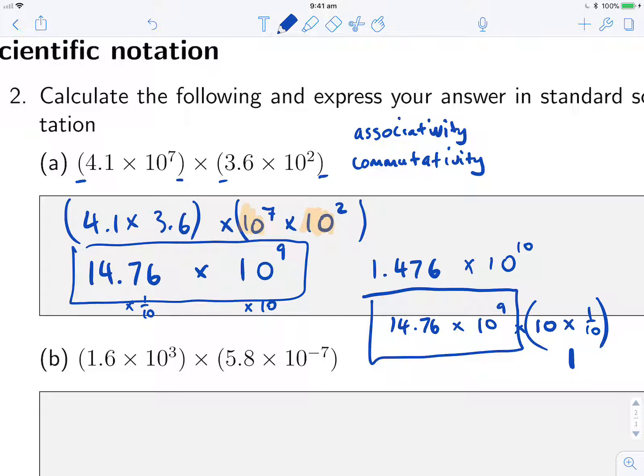So this is usually what we're doing with scientific notation: doing the multiplication, simplifying, then converting it into standard scientific notation by dividing or multiplying our A number, our leading number, by powers of 10, and adjusting the power that we were left with.